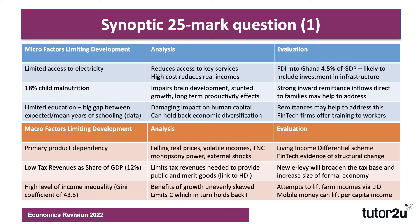Ghana also has a relatively high level of income inequality — the Gini coefficient is 43.5, and anything above 40 is considered high. The benefits of growth are unevenly skewed: the top 1% earn around 15% of income in Ghana. This wide dispersion of incomes can hold back consumption — if the vast majority of people are relatively poor, they have limited consumption spending. Raising their incomes by a few thousand dollars per capita would have a huge effect on consumer spending, driving investment. On evaluation, Ghana's living income differential scheme and mobile money research both show potential to increase per capita incomes and reduce income inequality over time.